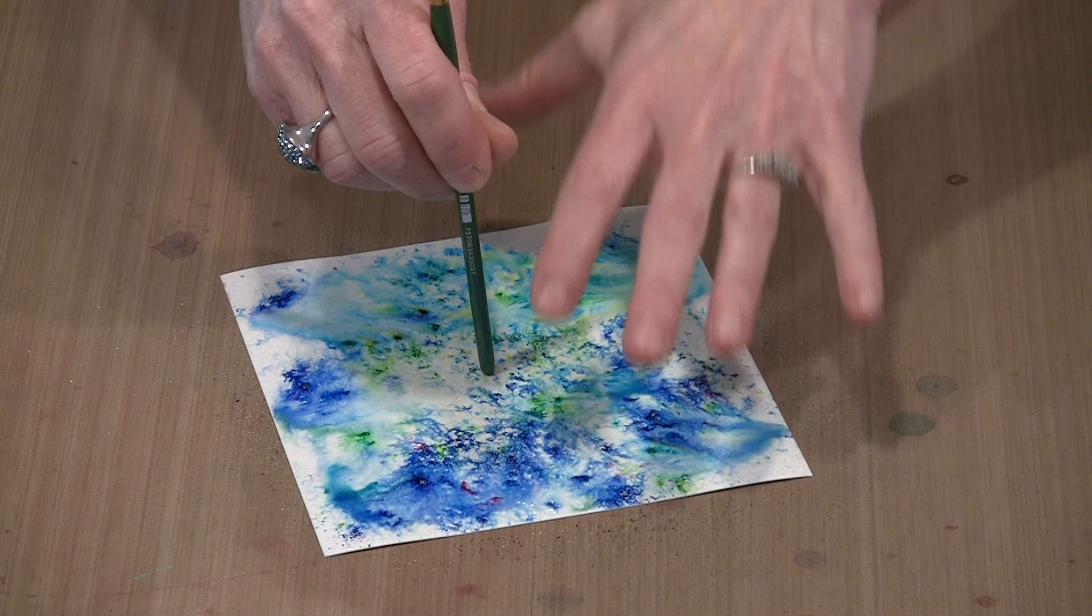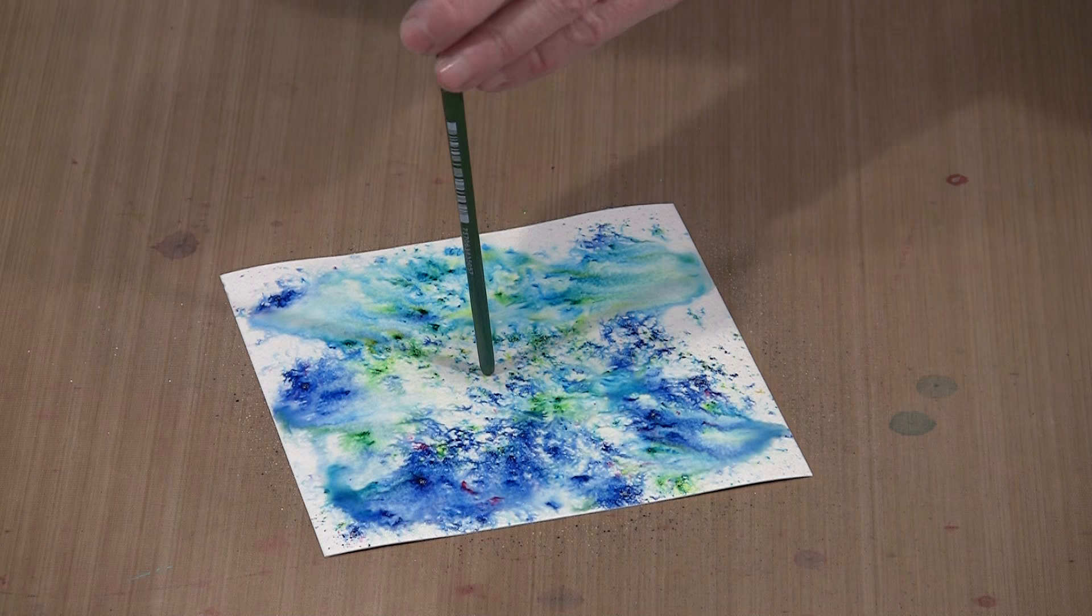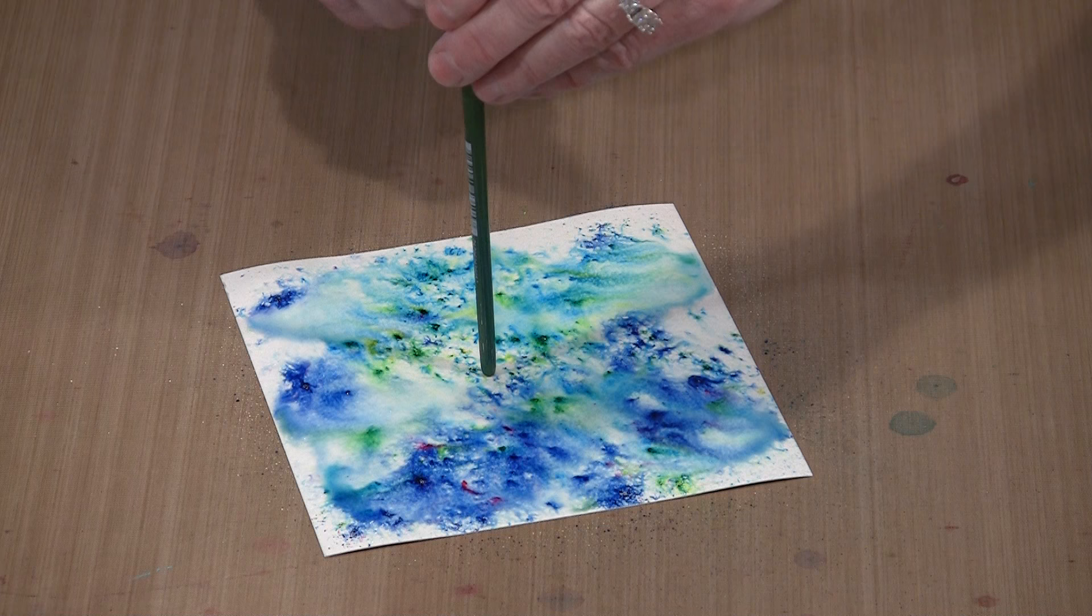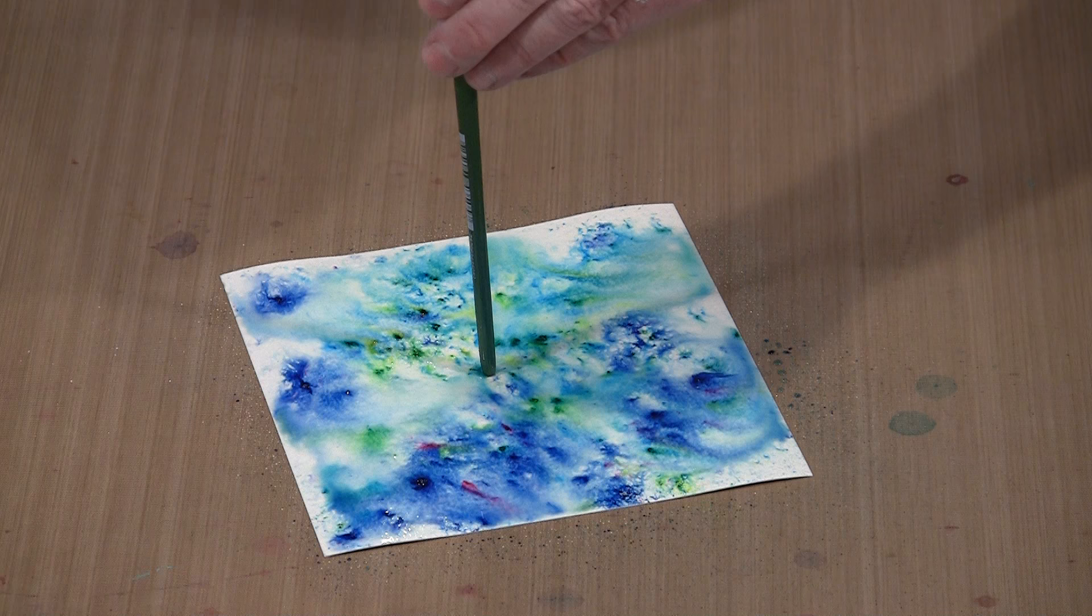And so you can kind of control things a little bit. Now the more water you add, the more mixing and blending you're going to get. And the less of this patterning you'll see. So it's just your decision about whether or not you want this pattern, or you want to add more liquid and you start to see all of that color move and you see less of those patterns. That's an individual choice. You can certainly do either when you're working in this manner.